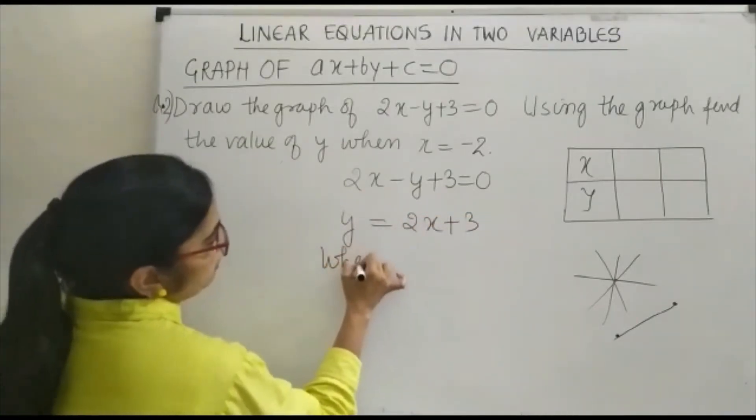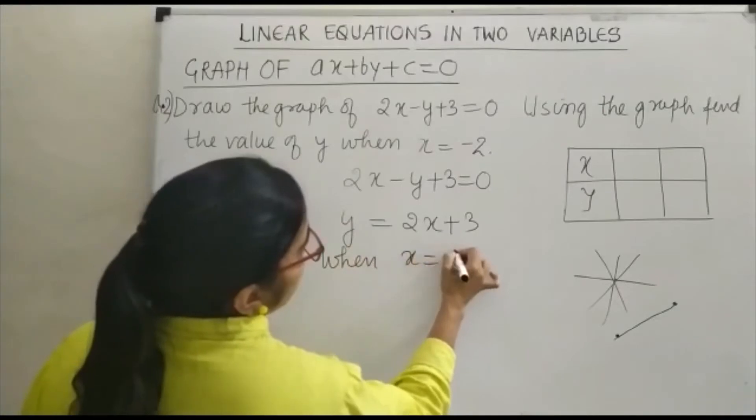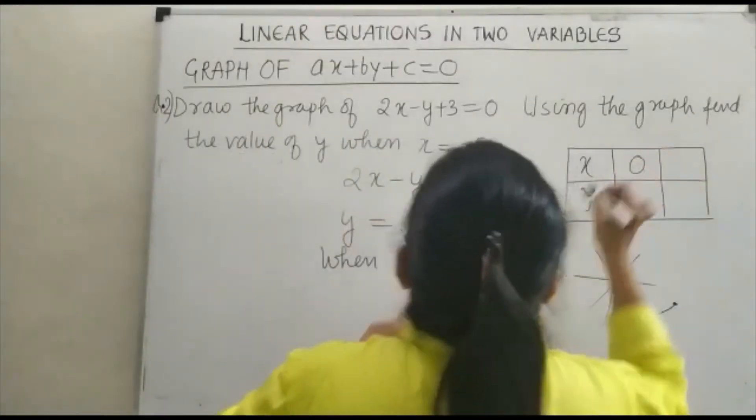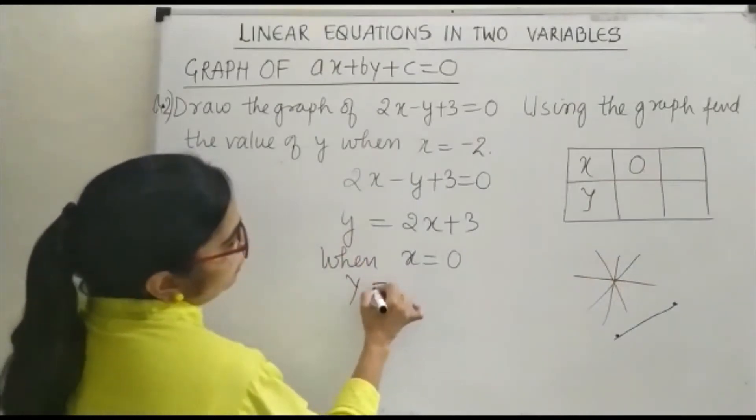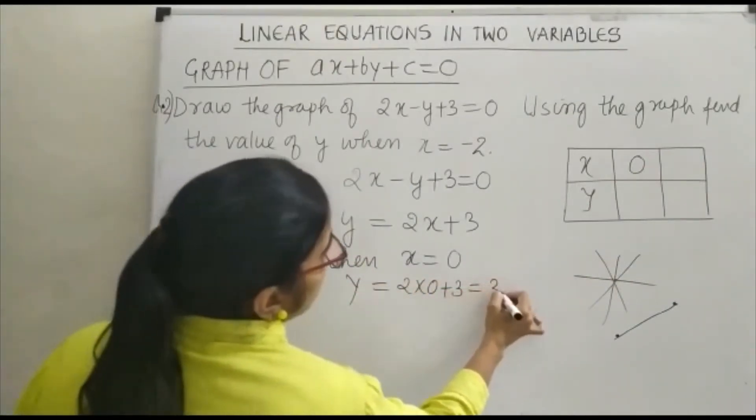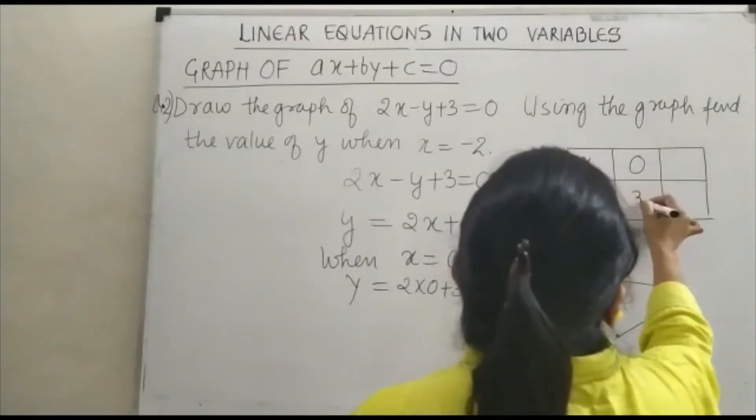So when x is equal to 0, then y is equal to 2 times 0 plus 3, that is 3.